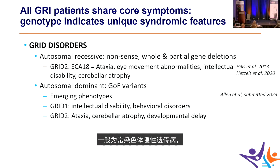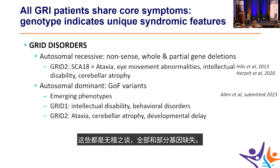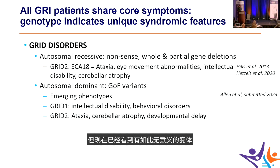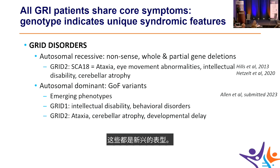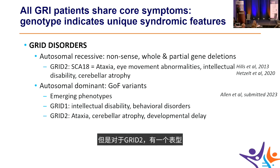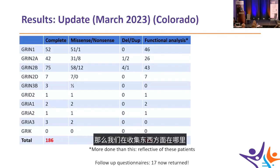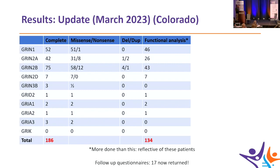GRID disorders were long thought to be autosomal recessive — involving nonsense variants, whole and partial gene deletions — associated with spinocerebellar ataxia type 18. Now missense variants causing gain of function in a single GRID allele are emerging. GRID1 phenotypes need further study; GRID2 shows a phenotype of ataxia, cerebellar atrophy, and developmental delay, with a paper in preparation from Steve's group.